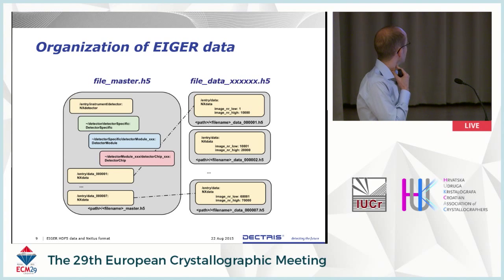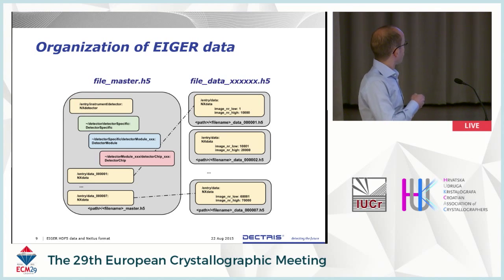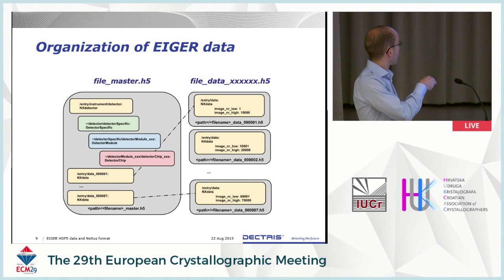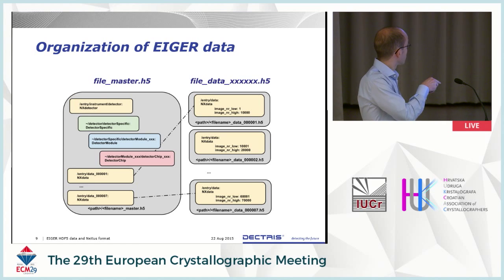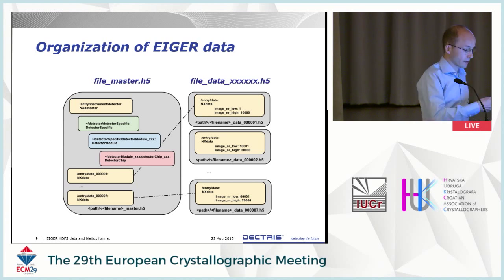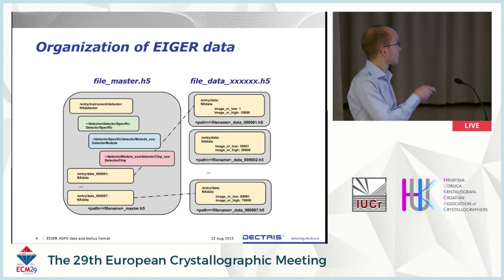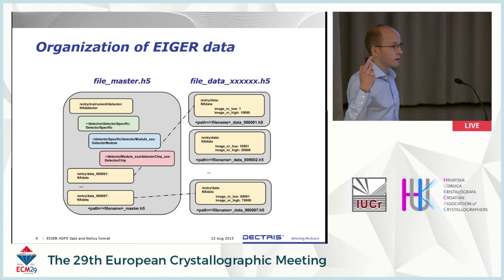In practice, when you collect data in this new way, you always get at least two files. One is the master file, where all the metadata is, and then there are the data files themselves — the master file contains links to these data files. The data files are not necessarily individual images; they can be sets of images: 10, 100, or 1,000 images. To the user this is transparent — you always work with the master file. You open the master file, go to image 5,900, and the viewer knows where it is from the link.